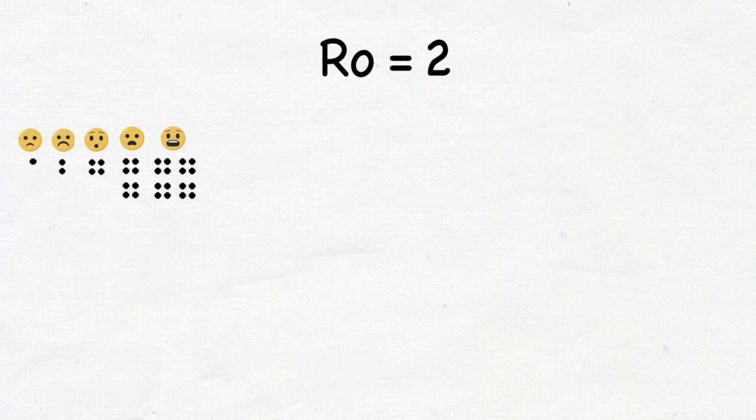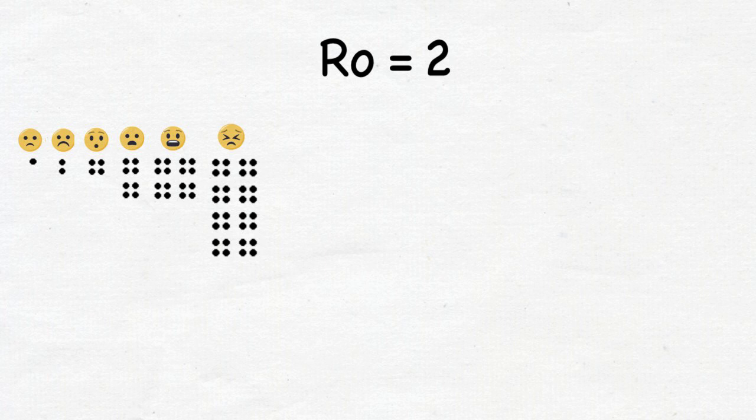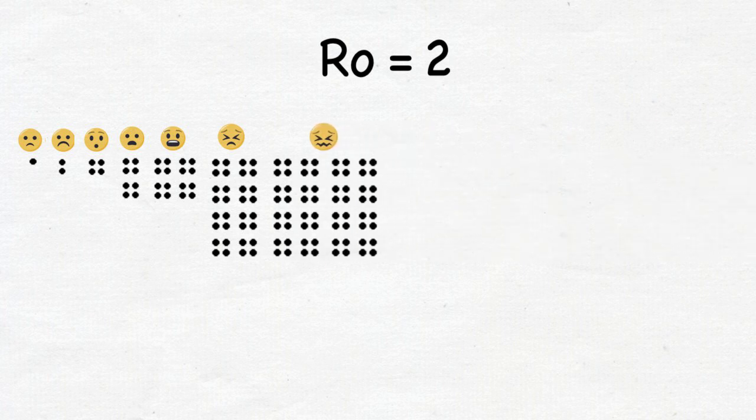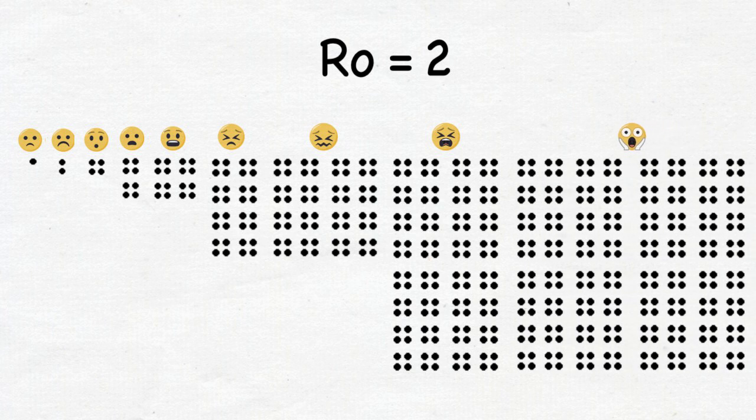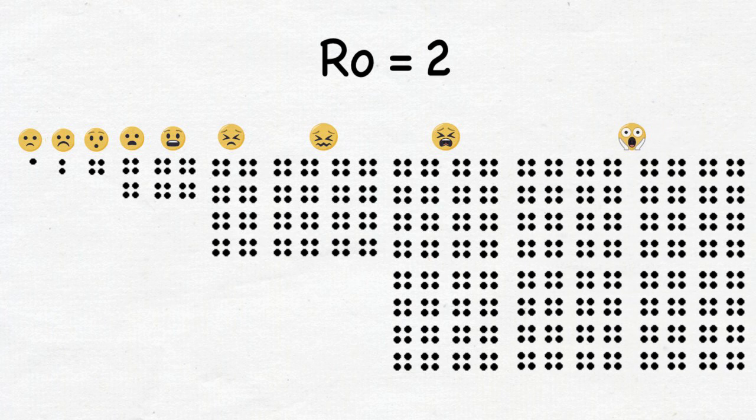the next 16 to 81 people infect 32 to 243 people. Then 64 to 729 people. Then 128 to 2,187 people. The snowball effect is seriously alarming.